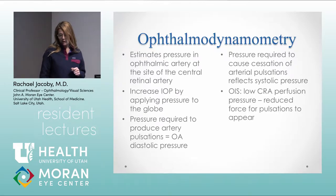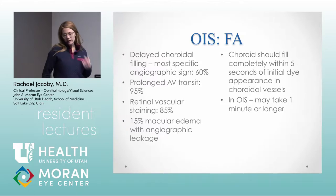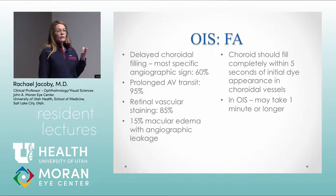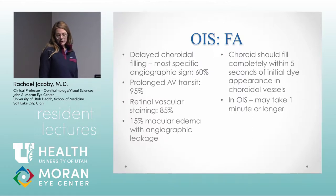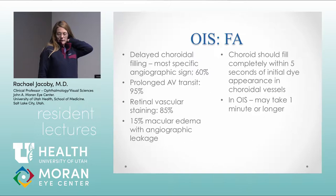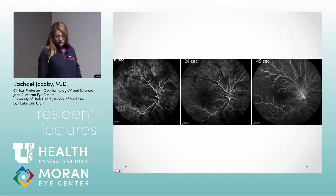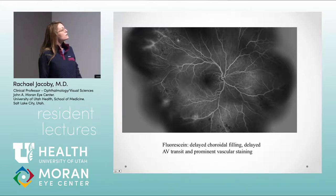Another clinical finding is the fluorescein angiogram. The most common finding would be prolongation of the AV transit — that's the most sensitive sign — but the most specific sign would be delay in choroidal filling. Normal choroidal filling should happen within five seconds of the dye being pushed, but in ocular ischemic syndrome it can take quite a bit longer, even up to a minute. You can also see retinovascular staining, typically staining of the arteries, and leakage into the macula. This shows the delay in choroidal filling — even at 24 seconds the choroid isn't completely filled, and at 49 seconds the veins still aren't filled.